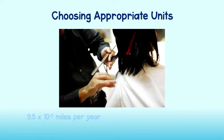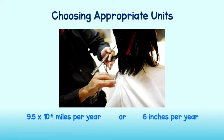For instance, did you know that human hair grows 9.5 times 10 to the negative fifth miles per year? This is also equivalent to about 6 inches per year. Which of these units can you best visualize?